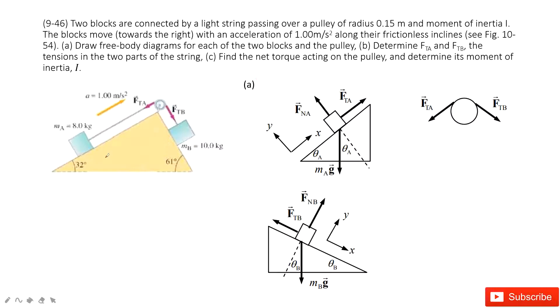In this system, we can see we have two blocks that are connected by a light string, and these two blocks are on a slope with different angles theta. The first one, we need to draw the diagrams for each of the two blocks.